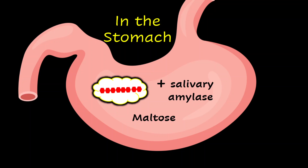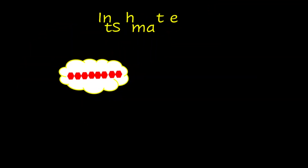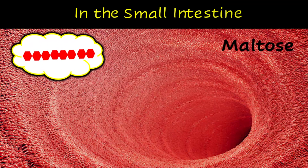Remember that the stomach is acidic. Therefore the salivary amylase is not suitable to work in this condition, and so the salivary amylase will be denatured. The remaining starch and the maltose will now travel towards the small intestine.